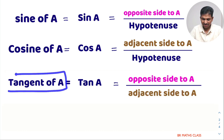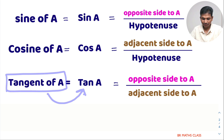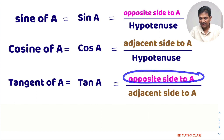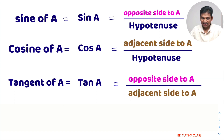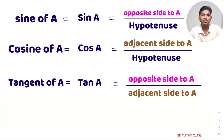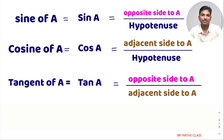The third trigonometric function is tangent of A, simply called tan A — taking the first three letters of tangent. Tan A is defined as the opposite side to A divided by the adjacent side. These are the first three trigonometric functions. If you memorize tan A, you need to say tan A is opposite side divided by adjacent side.